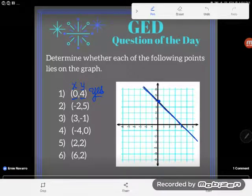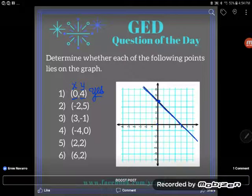Number 2, the point (-2,5). Well, let's take it out. Starting at the origin, I'm going to go negative 1, 2, and then positive 1, 2, 3, 4, 5. I'm close to the graph, but I'm not on it. The answer to that is no.